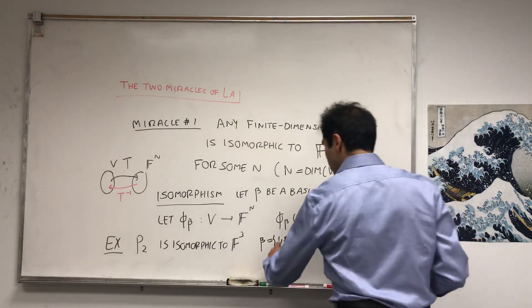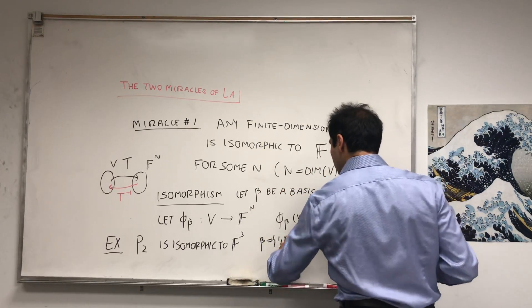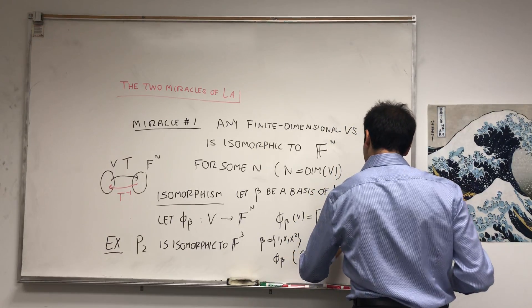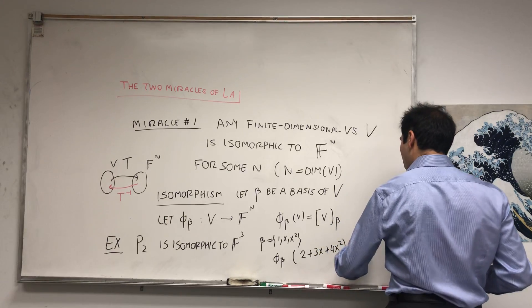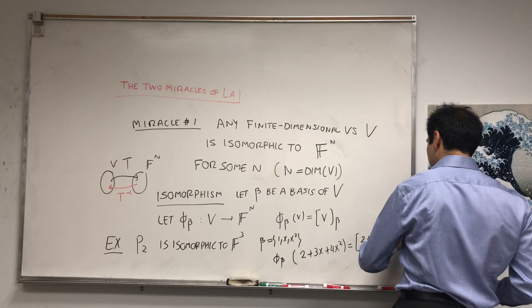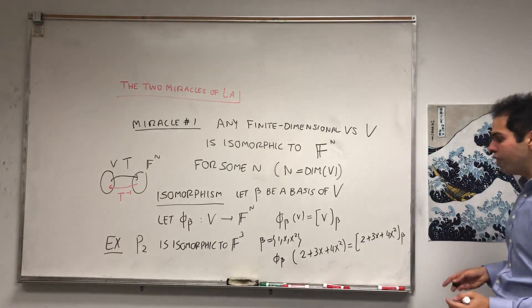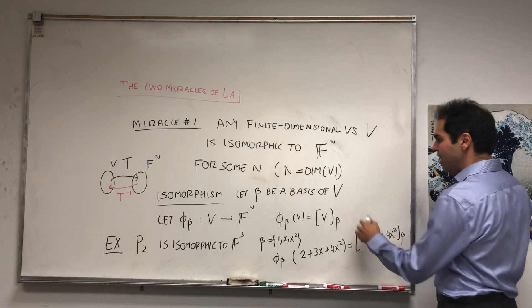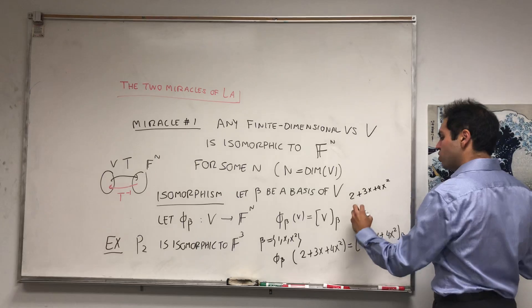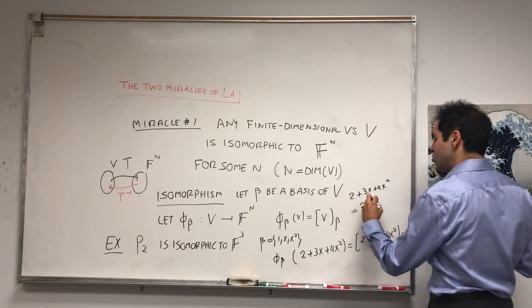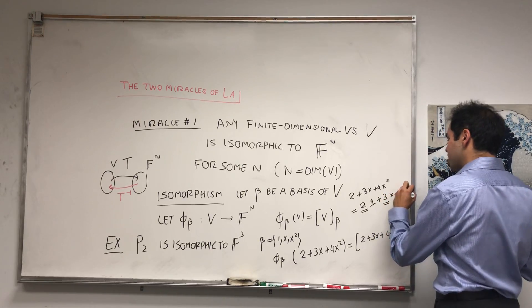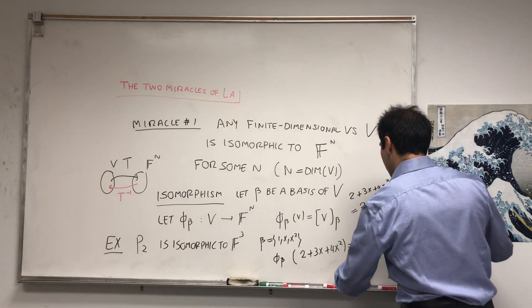For example, if you let beta be the standard basis, then phi_B of this really abstract polynomial 2 + 3x + 4x^2, well that's the coordinates of 2 + 3x + 4x^2 with respect to beta. But how do you find coordinates? You evaluate the vector 2 + 3x + 4x^2 in terms of your basis vectors. So it's 2 times 1 plus 3 times x plus 4 times x^2, and that gives you (2, 3, 4).